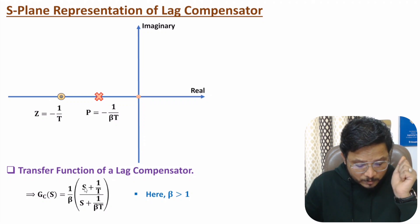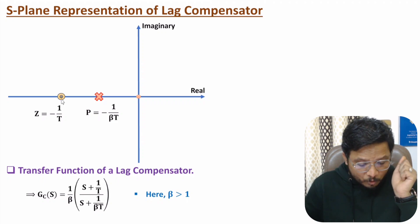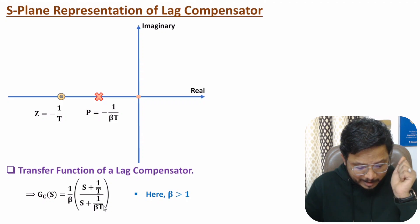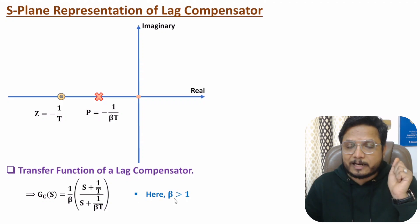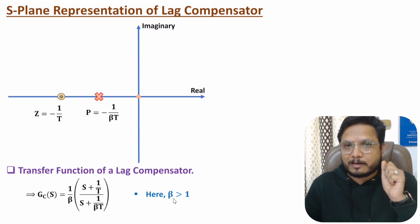In lag compensator, the pole is on the right side of the zero, and that is possible only if beta is greater than one. So if you observe the transfer function, then one by beta is the attenuation due to lag compensator. We have zero that is s plus one by T, and one pole that is s plus one by beta T. With lag compensator, this beta value is greater than one.